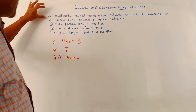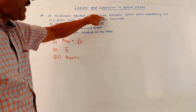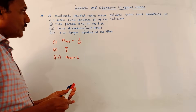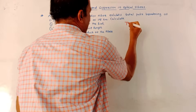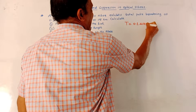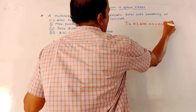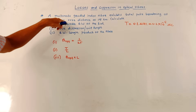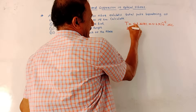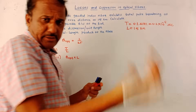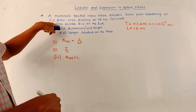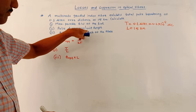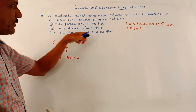Now let us solve a numerical related to dispersion. A multimode graded index fiber exhibits a total pulse broadening T of 0.1 microseconds (0.1 × 10⁻⁶ seconds) over a distance L of 15 kilometers. We need to calculate: first, the maximum possible bandwidth of the link; second, the pulse dispersion per unit length; and third, the bandwidth-length product of the fiber.